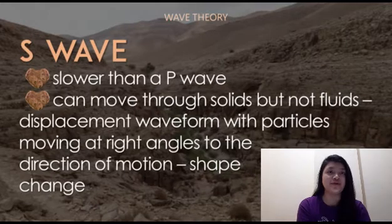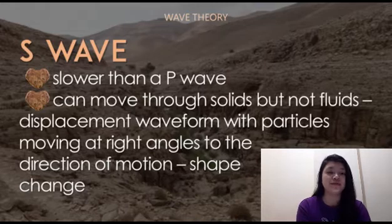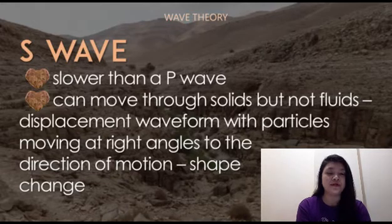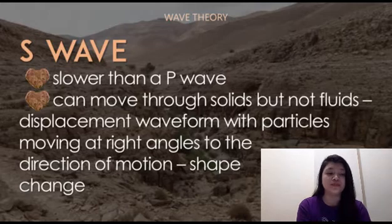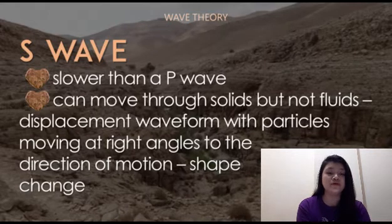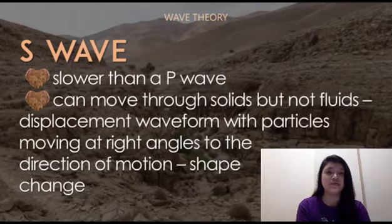The S wave, or secondary wave, is the second kind of body wave — the second wave you feel in an earthquake. An S wave is slower than a P wave and can only move through solid rock, not through any liquid medium. It is this property of S waves that leads seismologists to conclude that the earth's outer core is liquid. S waves move rock particles up and down or side to side, perpendicular to the direction of wave propagation.